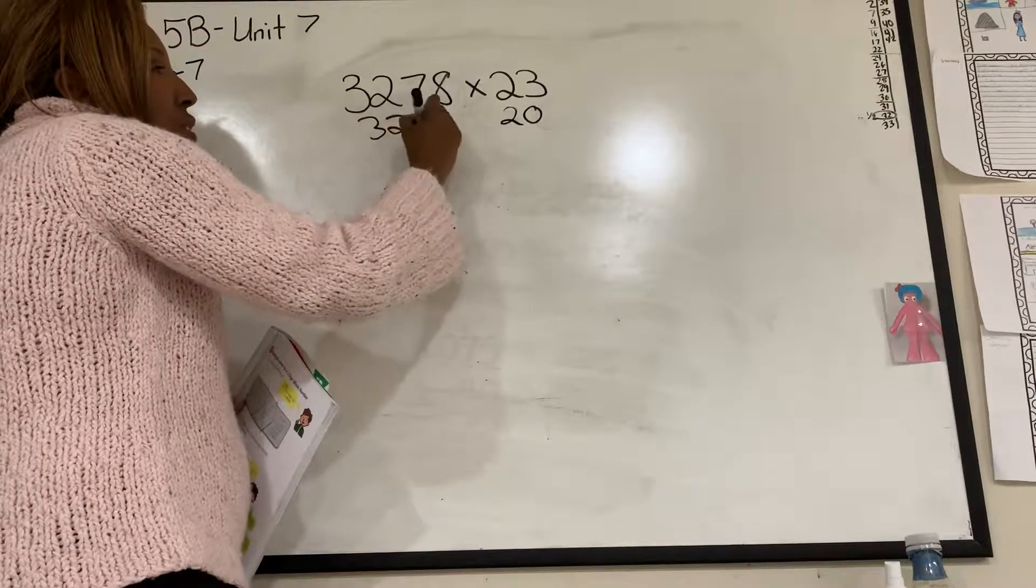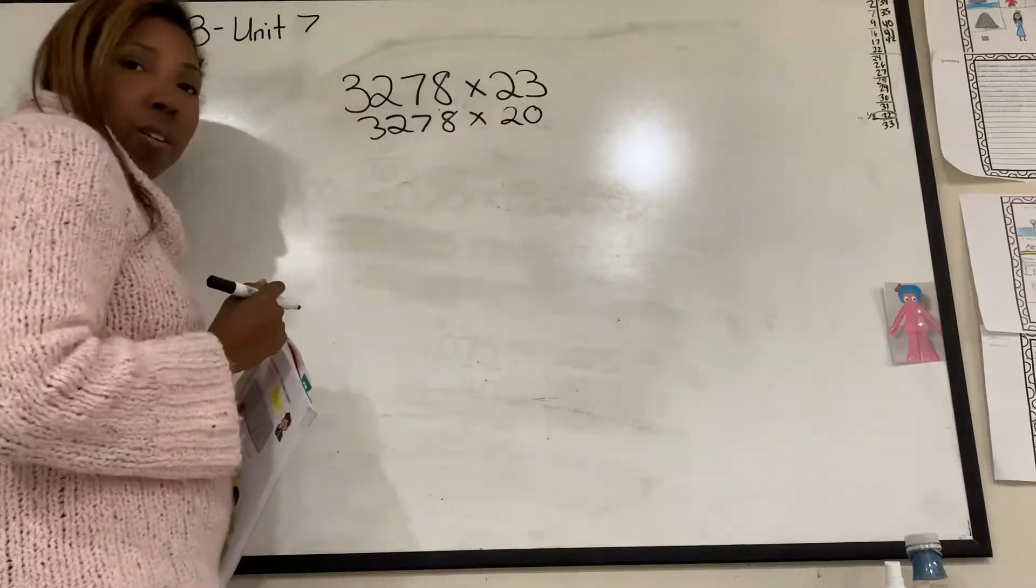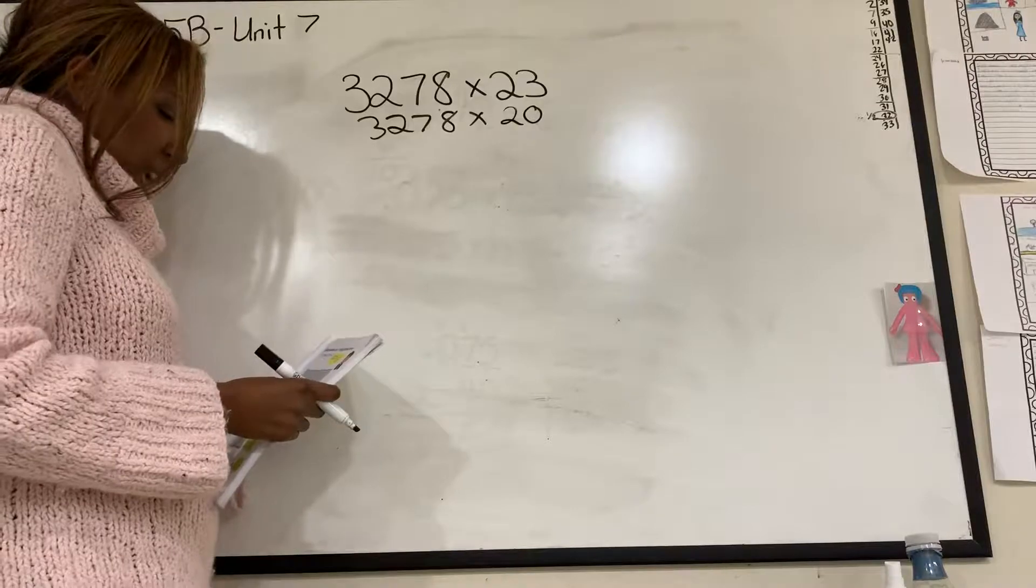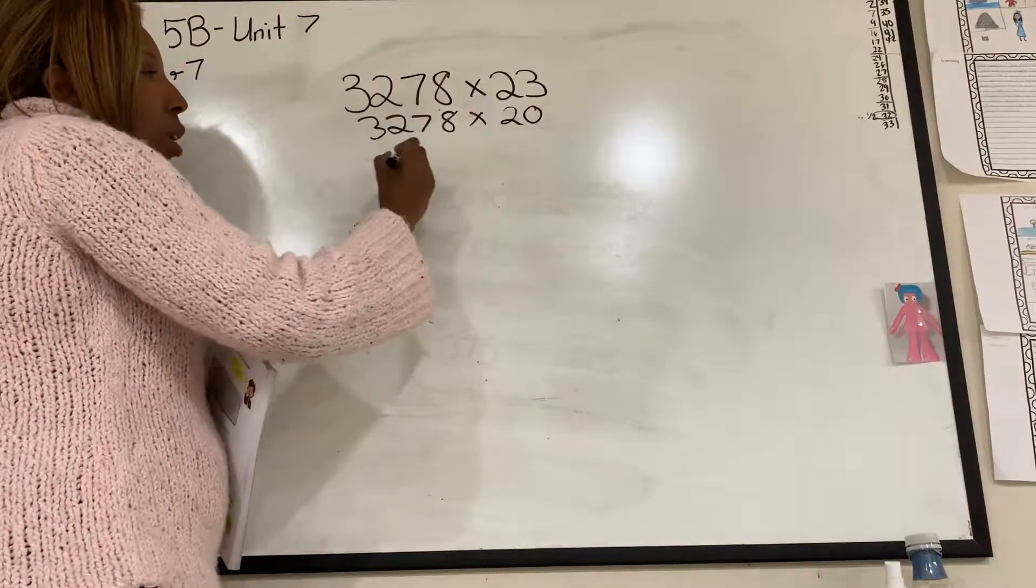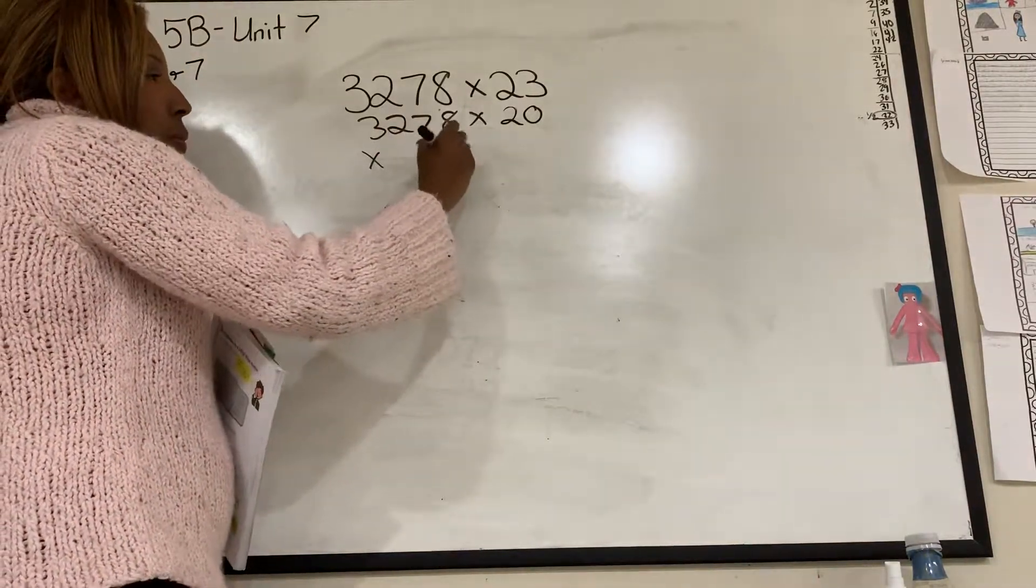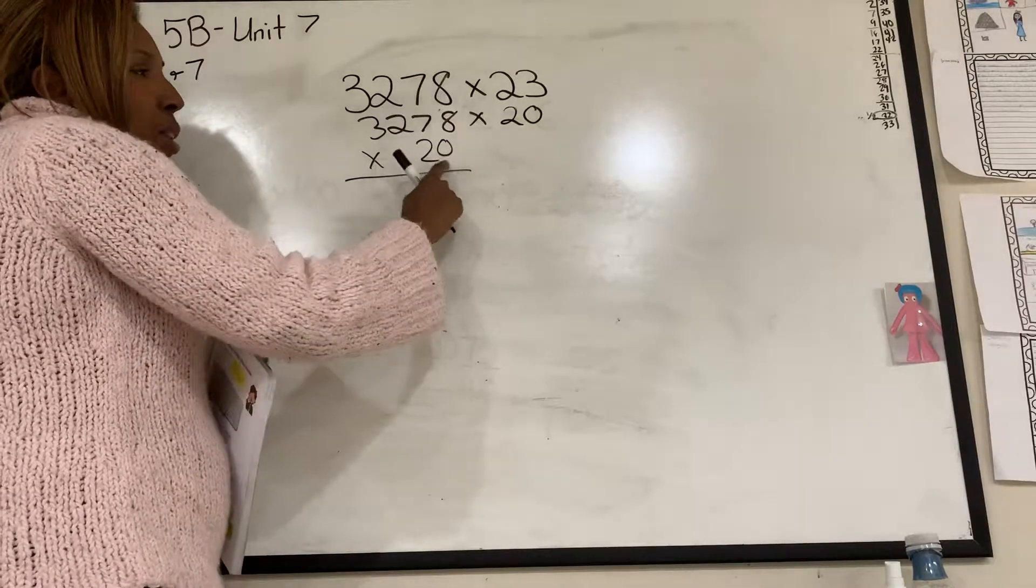So this is about 20. So I have 3,278 times 20. Correct? So let's see. If I have that, then I know that I'm going to put it down here because that's easier.